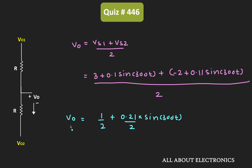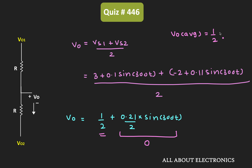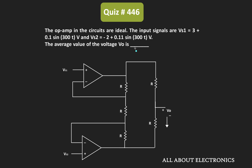We need to find the average value of the output voltage. Since the average value of a sine wave is zero, the sine term contributes nothing. Therefore, the average output voltage VO_average = 1/2 = 0.5 V. So for the given circuit, the average value of the output voltage is 0.5 V.